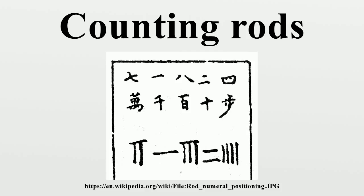By the time of the Sui dynasty, triangular rods were used to represent positive numbers and rectangular rods were used for negative numbers. After the abacus flourished, counting rods were abandoned except in Japan, where rod numerals developed into a symbolic notation for algebra.